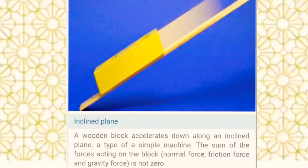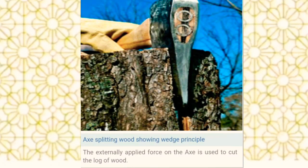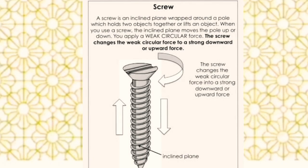The inclined plane is a slope or ramp that reduces the effort needed to move something — for example, a staircase. A wedge is an inclined plane that pushes an object with more force than needed to move the wedge. A screw is an inclined plane wrapped around a pole that helps to join or hold things together.